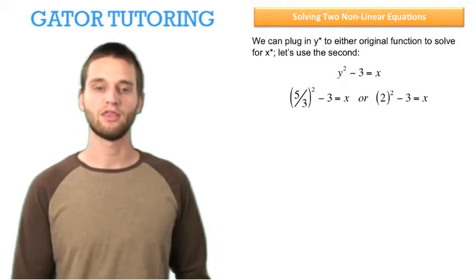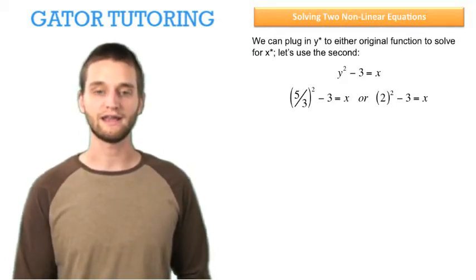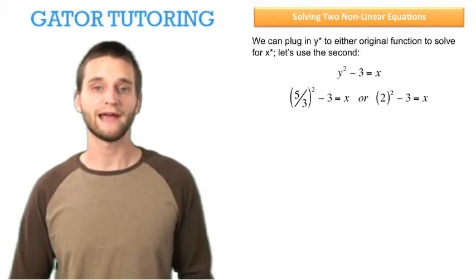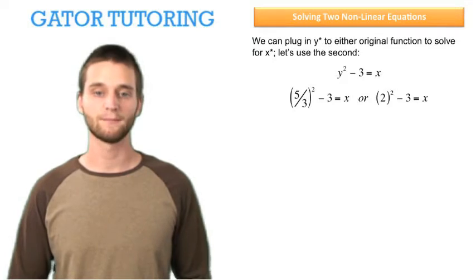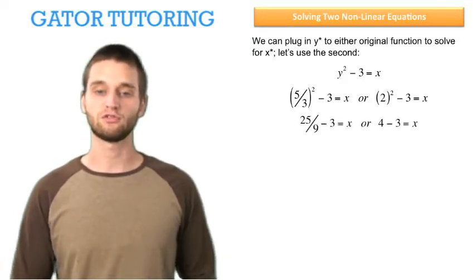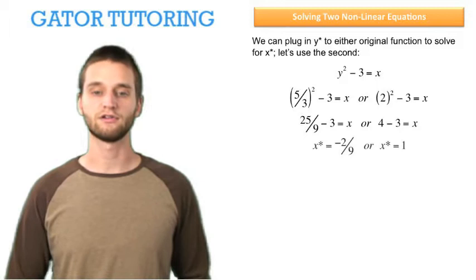We plug those two values in for y here. We have two different equations that now only have x in them, and that's what we're looking for. We're trying to solve for x star. So we plug these equations in, we square them, and then we solve for x.